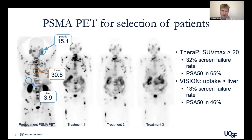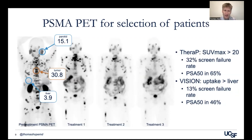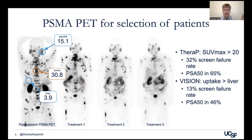Now let's talk about the use of PSMA PET for selection of patients. The VISION trial and the TheraP trial had two very different selection criteria. The VISION trial required patients to have uptake greater than the liver. These numbers on the left are SUVs — quantitative measures of uptake. The higher the number, the more radioactivity goes to that tissue. An SUV of one means the tissue doesn't concentrate the radiation at all; two means it doubles the concentration over even distribution. In this case, the patient had an SUV mean of four in the liver.